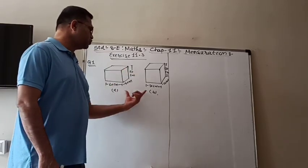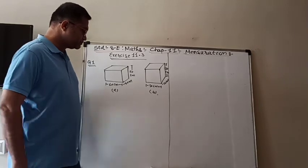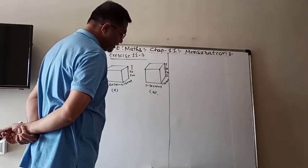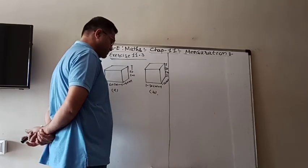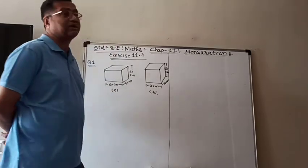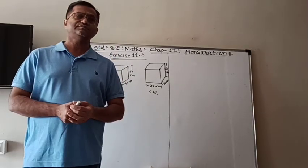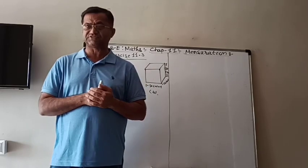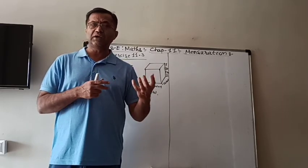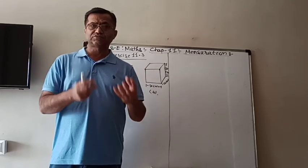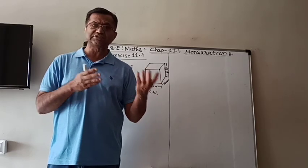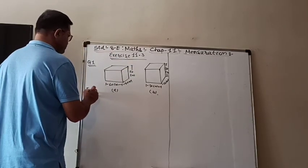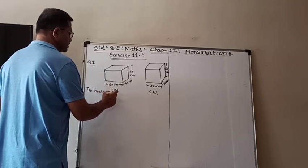In question number 1, there are two figures given, and their dimensions are also given. There are two boxes. We have to check which box requires the lesser amount of material to make. It means all the surfaces are to be made, so we have to find the total surface area of both boxes and then compare. Whichever TSA is less will require less material. For box A, there is a cuboid.